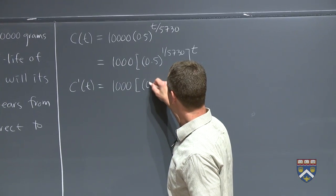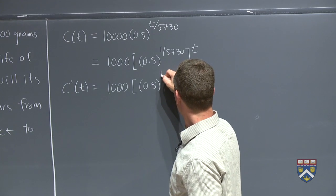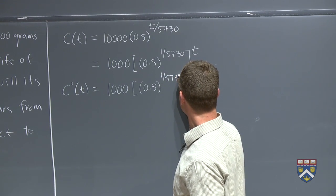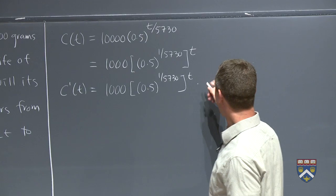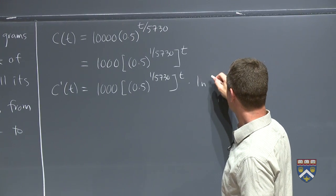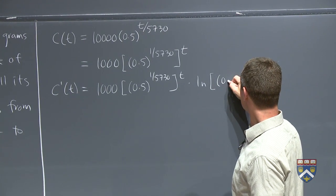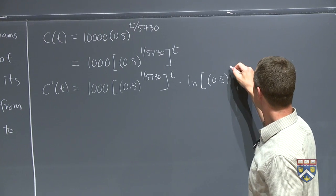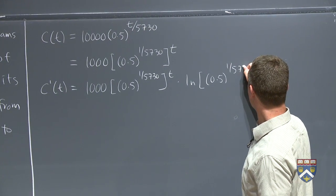So it should be 0.5 to the (1 over 5730), raised to the t, and then times the natural log of this quantity, 0.5 to the (1 over 5730).